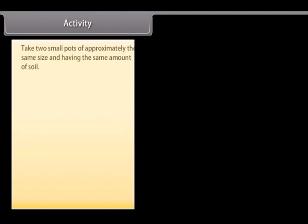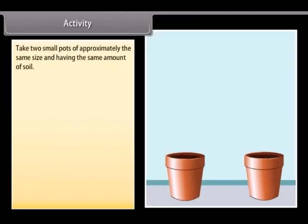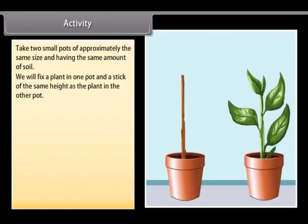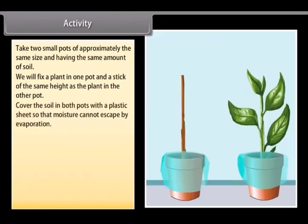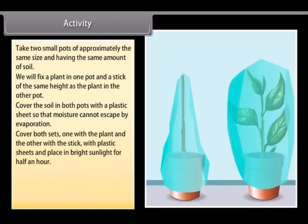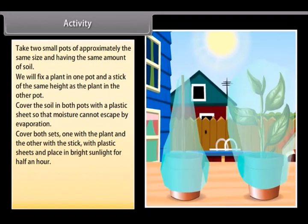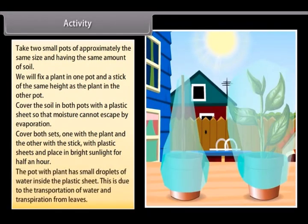Activity. Take two small pots of approximately the same size and having the same amount of soil. Fix a plant in one pot and a stick of the same height as the plant in the other pot. Cover the soil in both pots with a plastic sheet so that moisture cannot escape by evaporation. Cover both sets with plastic sheets and place in bright sunlight for half an hour. The pot with plant has small droplets of water inside the plastic sheet. This is due to the transportation of water and transpiration from leaves.